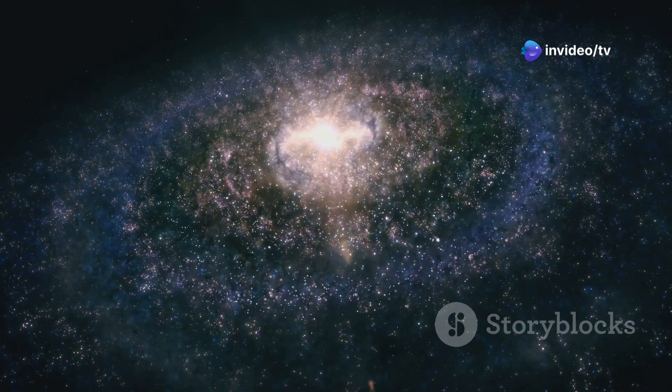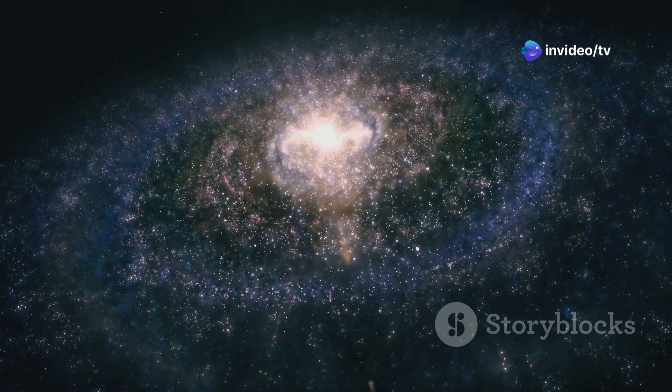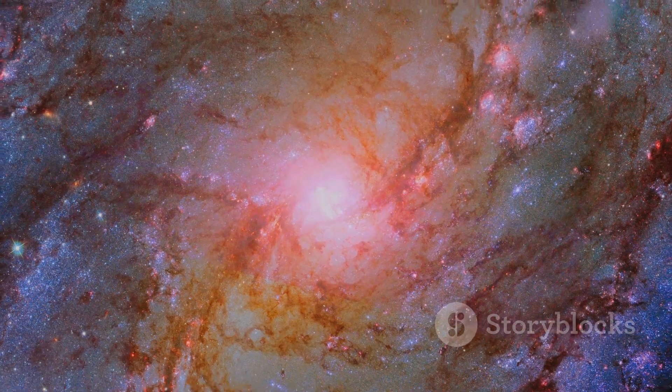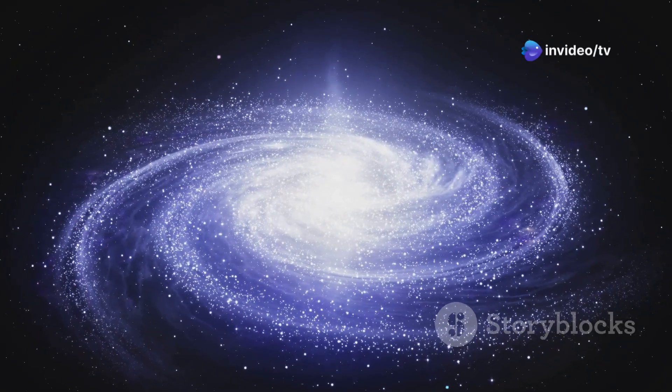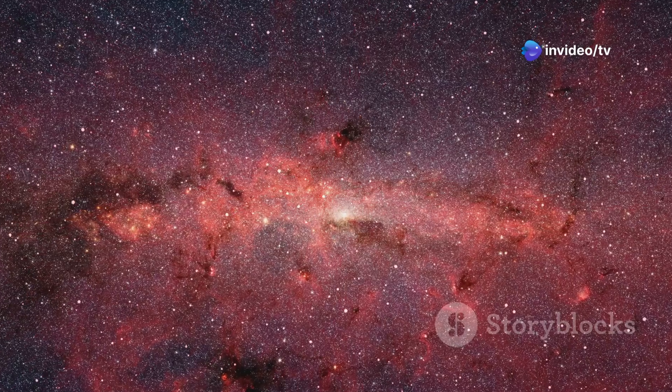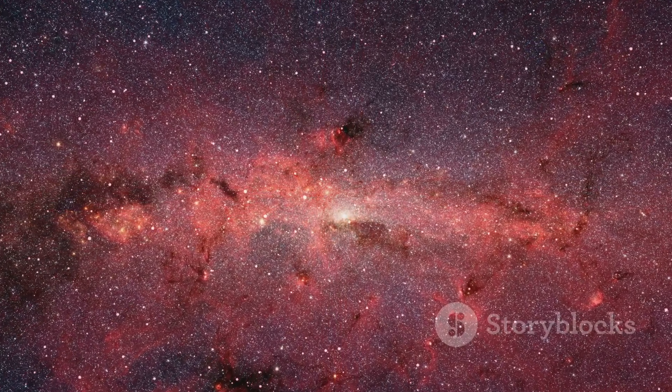The Milky Way has two major spiral arms: the Perseus arm and the Scutum Centaurus arm. There are also several minor arms. These arms are constantly moving, rotating around the galactic center. It's within these spiral arms that we find the most active star formation. Giant clouds of gas and dust collapse under their own gravity, igniting new stars and creating dazzling nebulae.